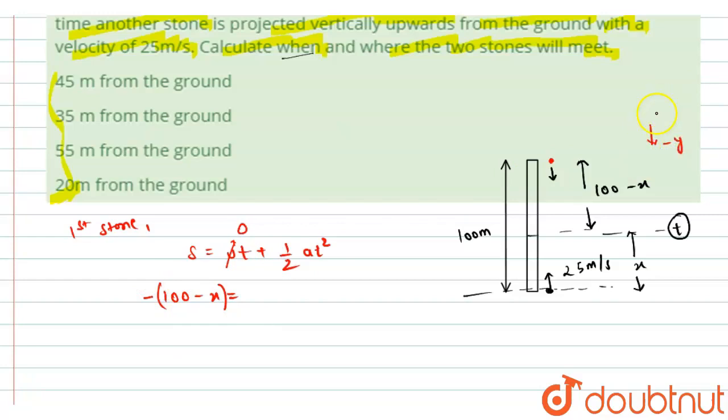to be negative y axis and upward to be positive y axis. So this would be displacement is minus of 100 minus x and this is half into the acceleration on this stone will be in the downward direction that is minus g, so we can write the value of g as minus 10 t square.